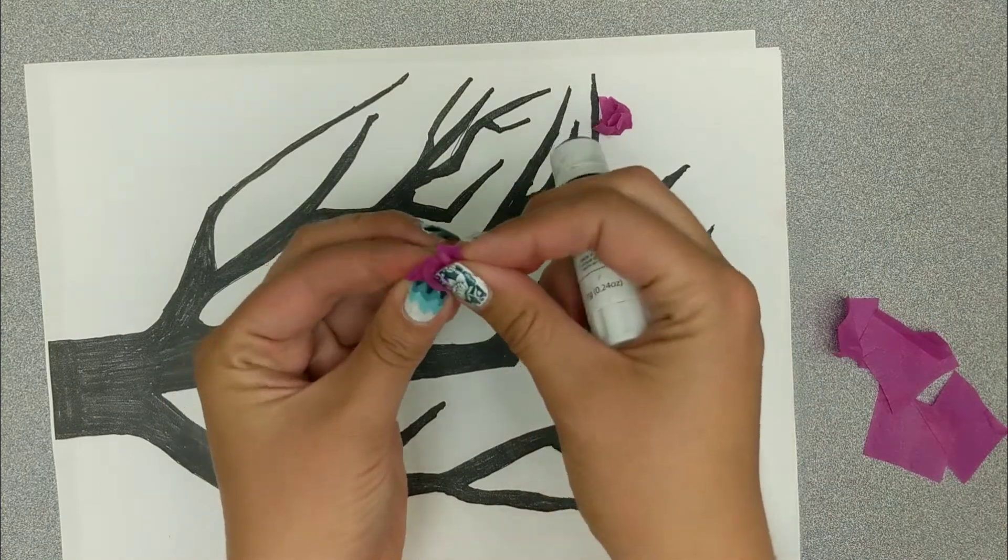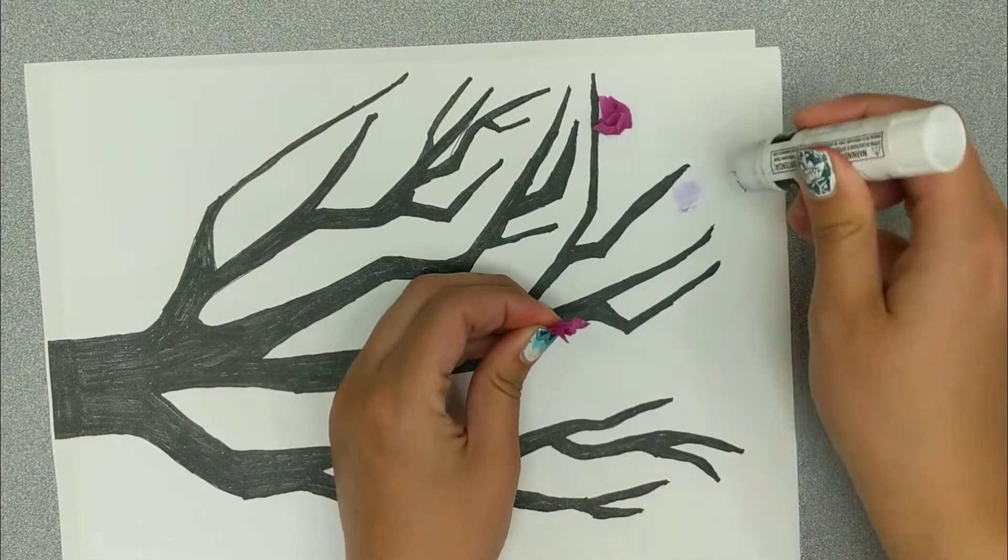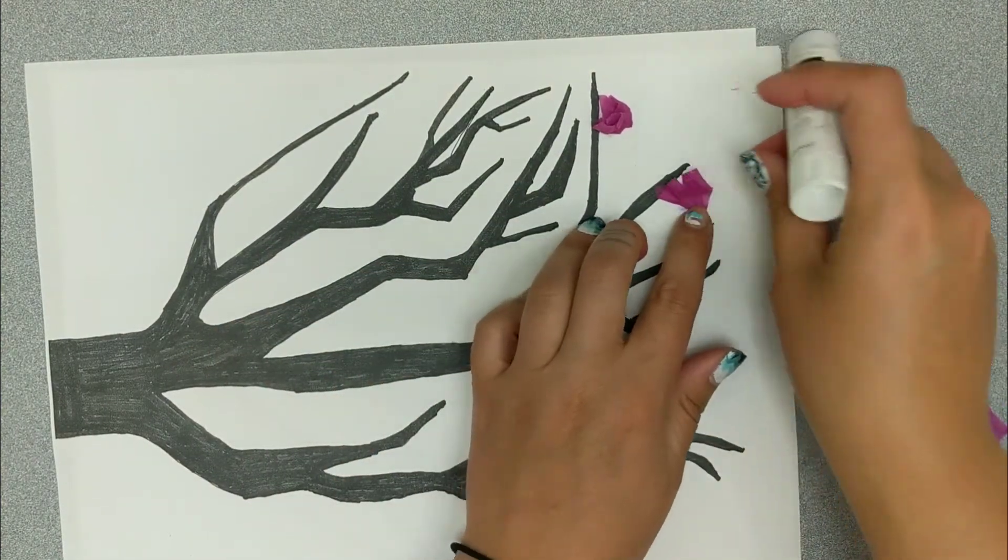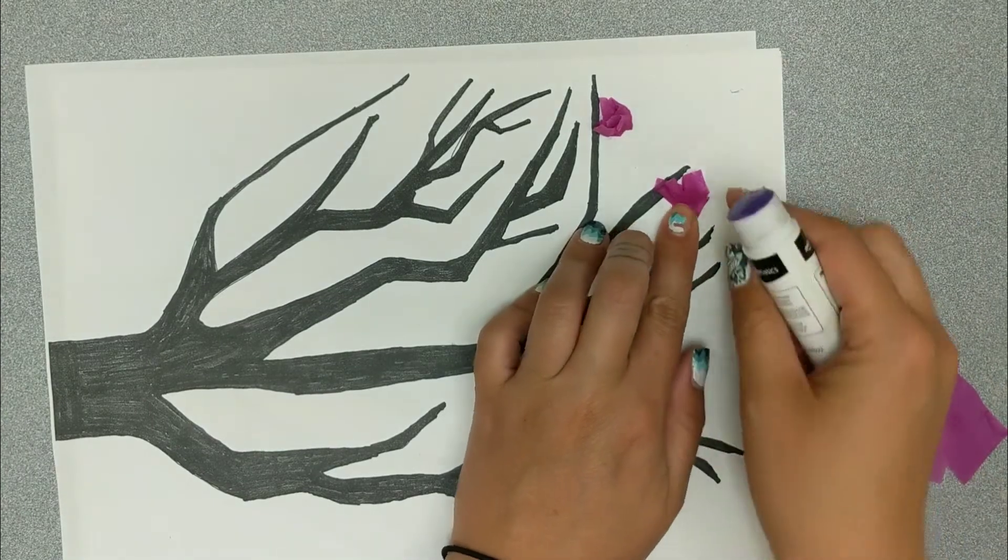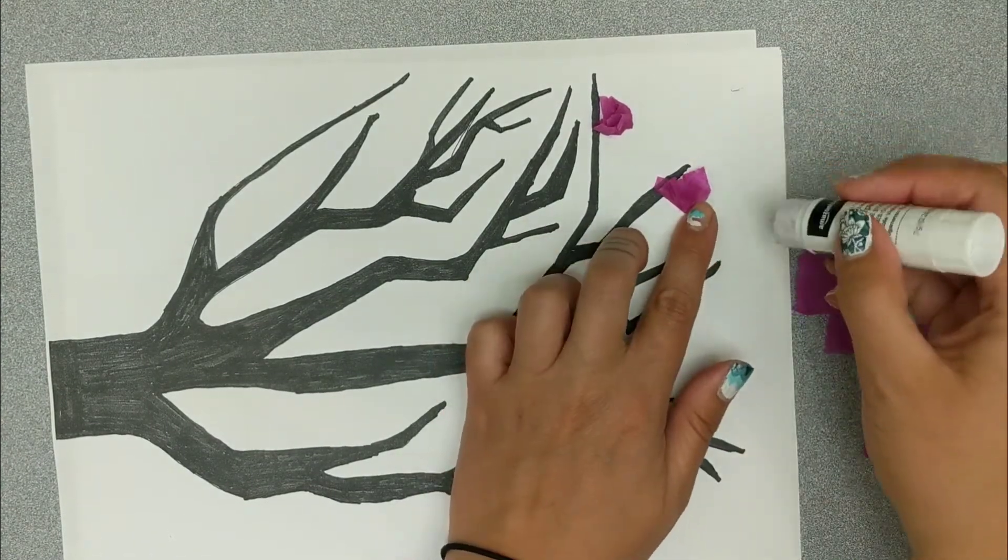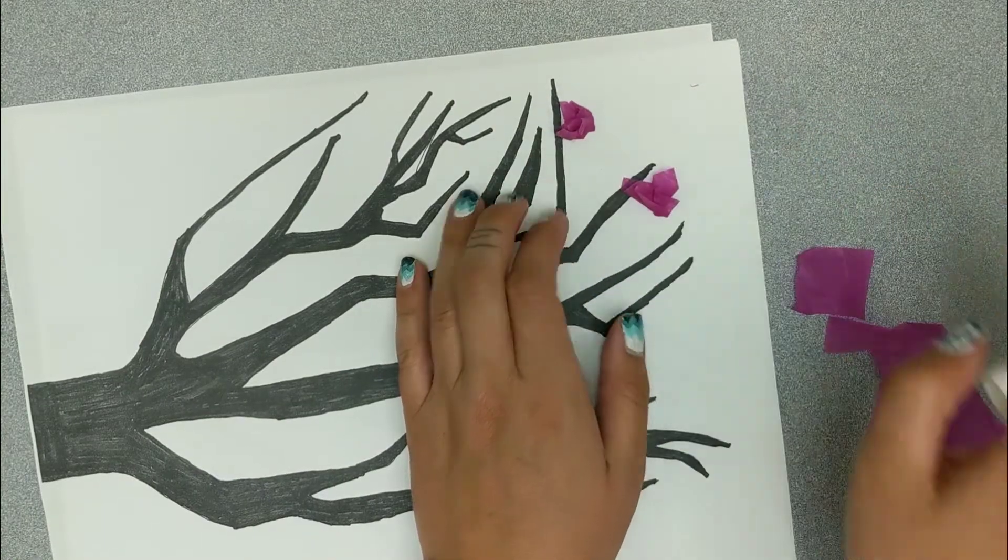So take another, crumple it up, put a little spot of glue out to the edge, and stick it down. And I'm not smooshing it all the way down. I'm letting it stand up from the paper a little bit.